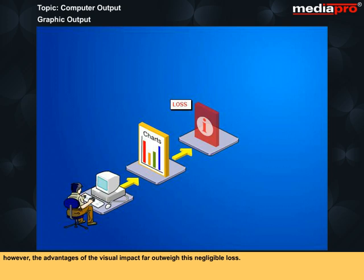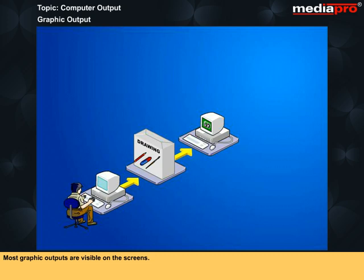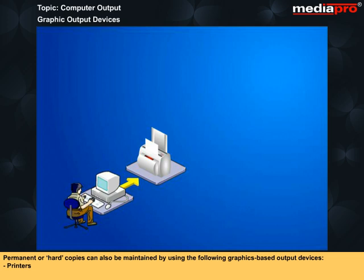Apart from graphic representations, drawing packages also produce a graphic image output, complete with a vibrancy of colors. Most graphic outputs are visible on the screens. Permanent or hard copies can also be maintained by using the following graphics-based output devices: printers, plotters, and camera photographs.